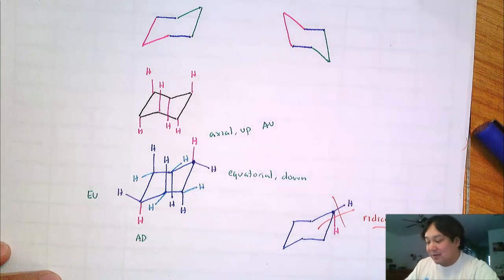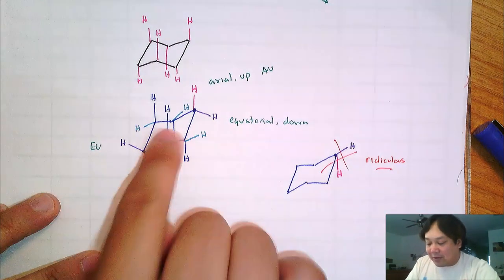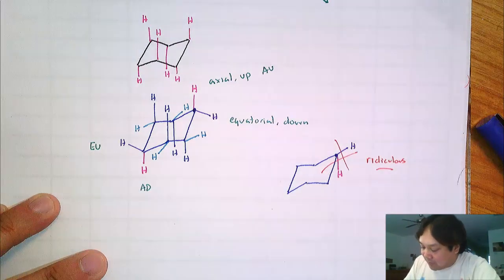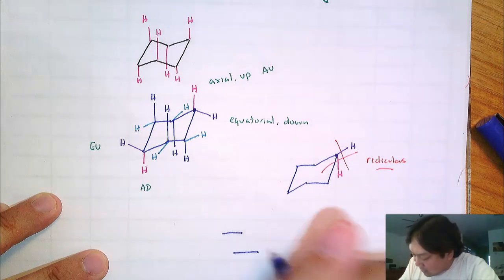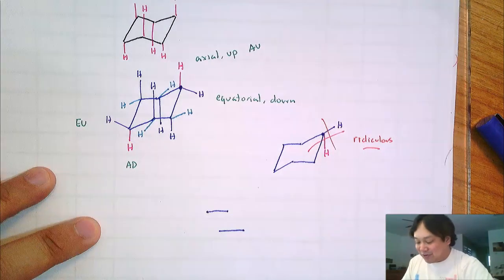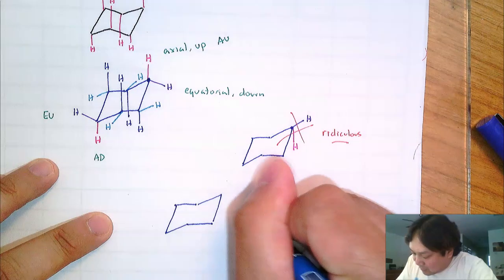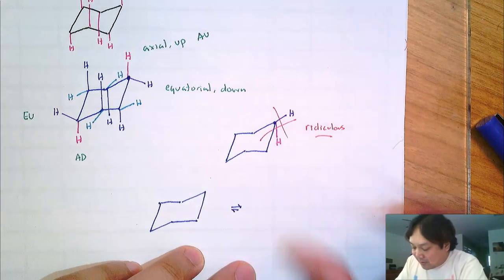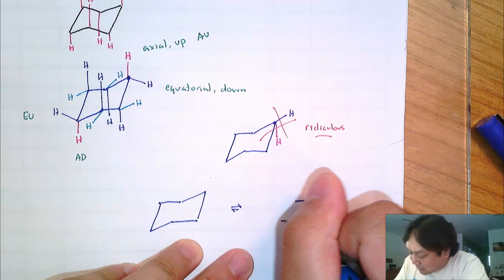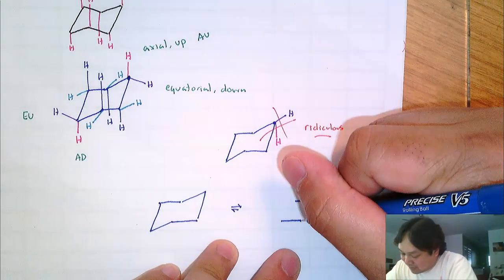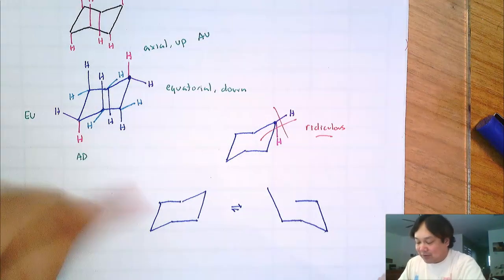That is one chair conformation. Can we do this for the other chair conformation? Remember, in this chair the person is looking to the left because their back is here. Let me draw the template for the other chair, where the back is on the left. The chairs are actually in equilibrium — they interconvert. Let's practice with the chair where the person is looking to the right.